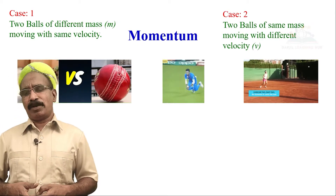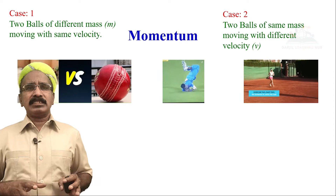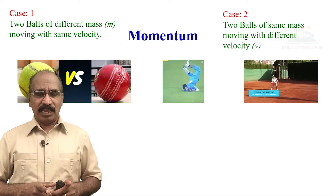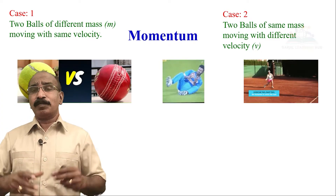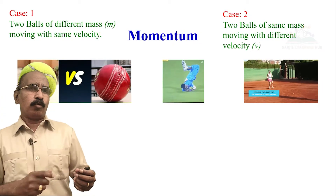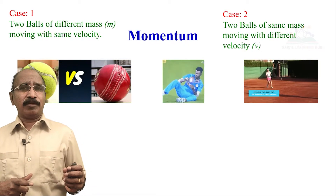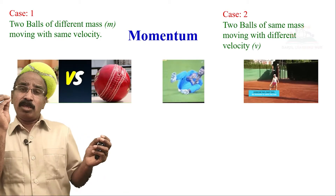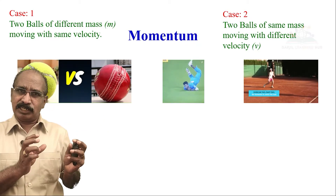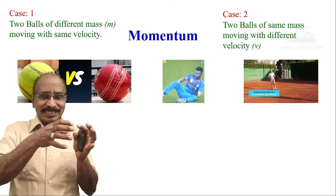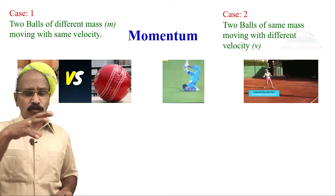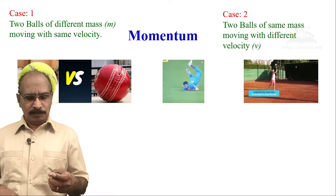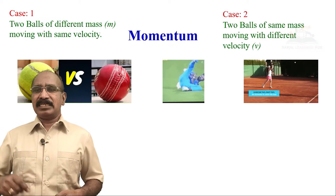This is the case of two balls with the same mass but different velocities. Now we vary them at the same time — one ball moves a little bit faster. What we are saying is the quantity of motion. Therefore, quantity of motion depends on two factors: one is the mass, and the second one is the velocity.